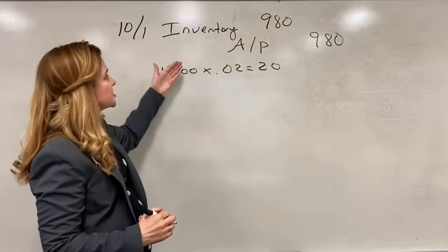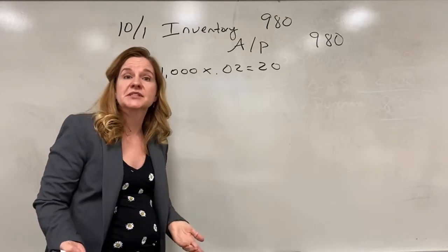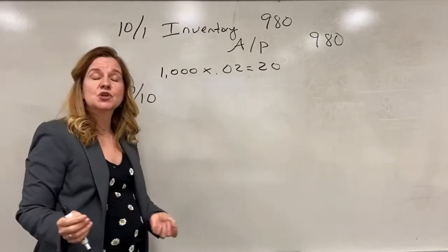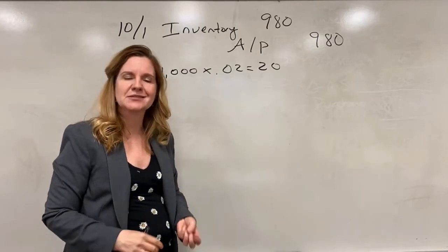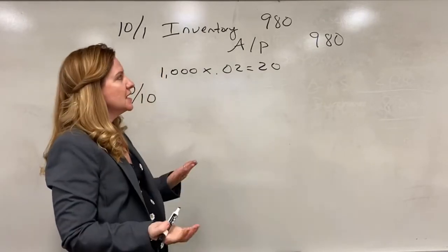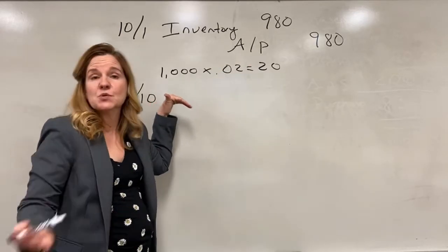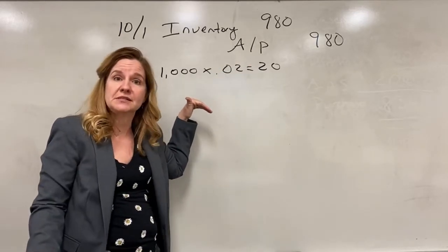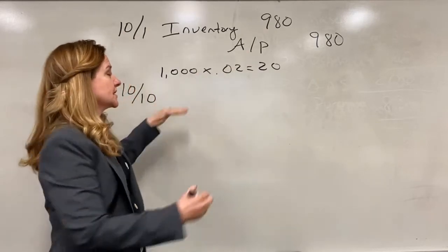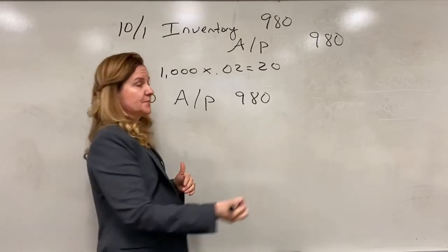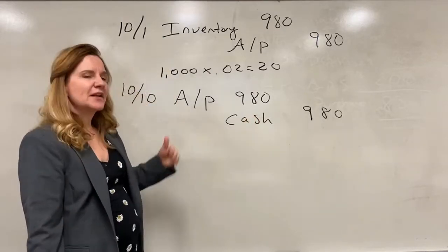Now let's assume that we pay within the discount period. Say we pay on October 10th. Remember the terms were 2/10 net 30, so it's within the ten day period. Then all that happens is we reduce accounts payable by the whole 980 because we already took into account the two percent discount. So we're going to reduce accounts payable by 980 and we're going to reduce cash. We're making the payment by 980. So that's one assumption.